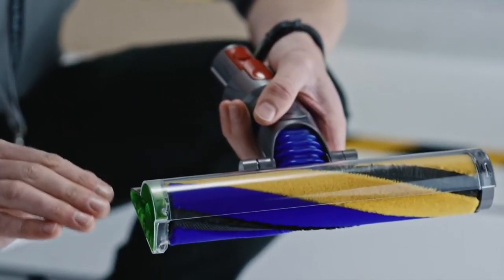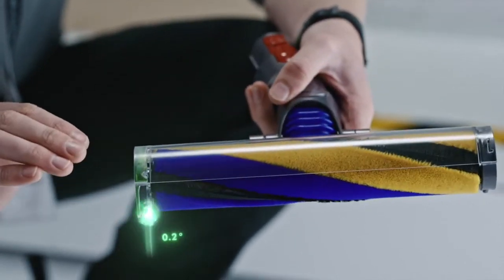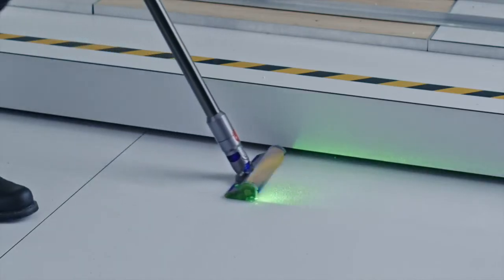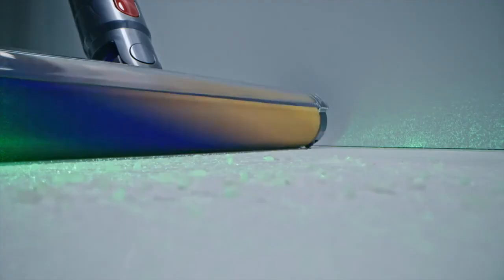Precisely projecting a blade of light 7.3mm above the floor and angled down exactly 1.5 degrees from the base of the brush bar to reveal hidden particles so you can see exactly where you need to clean.